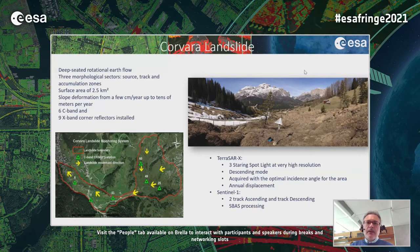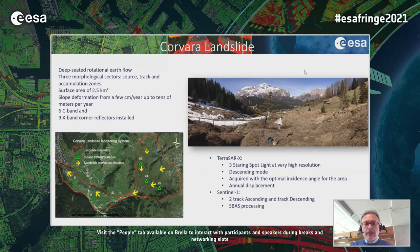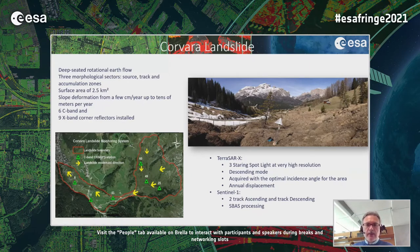The second landform is the Corvara landslide, a deep-seated rotational earth slope that has been studied for many years. It is characterized by pre-morphological sectors: a scarps zone in the eastern part, a track zone in the center, and an accumulation zone on the left. The surface area is 2.5 square kilometers and slow deformation varies from a few centimeters per year up to 10 meters per year. In the Lüsen regulation sector, it can reach just over one meter per year.